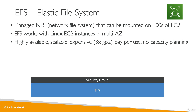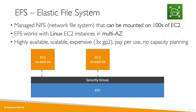Looking at a diagram, you have your EFS network file system with a security group attached to it, and you can mount that file system onto EC2 instances across various AZs — US-East-1A, US-East-1B, and US-East-1C.